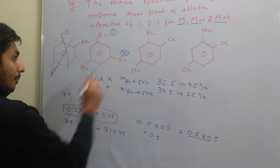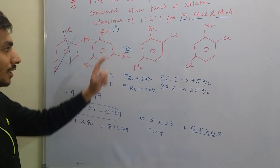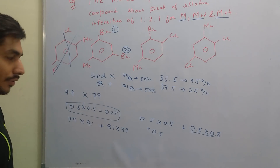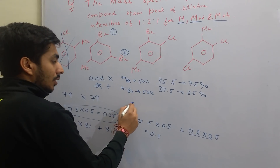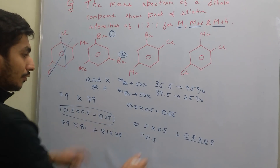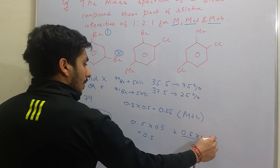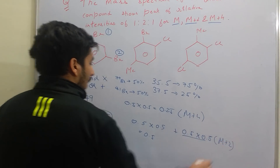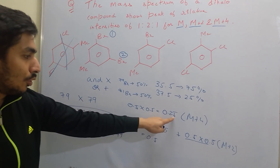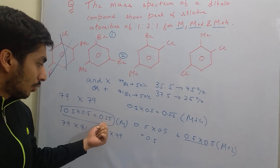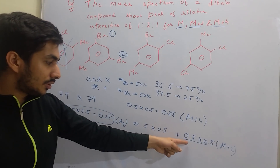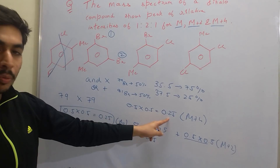So the intensities are: M = 0.25, M+2 = 0.5, M+4 = 0.25. Taking relative intensities, 0.25 : 0.5 : 0.25 gives us 1:2:1. This matches exactly the given relative intensities, so the correct answer is option B — the dibromo compound with two bromines.